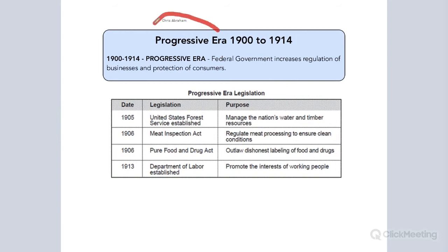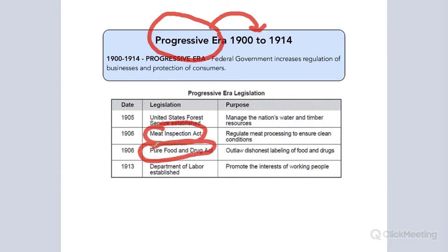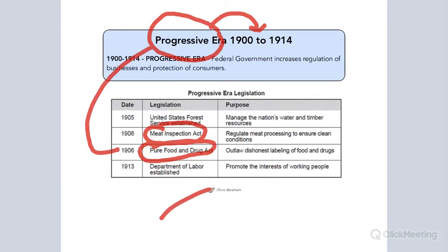Let's jump to the Progressive Era — this time frame when the U.S. government was getting involved and passing laws to protect the consumer. These laws were like the Meat Inspection Act or the Food and Drug Act — laws passed because at that time there were no regulations in factories to make sure that meat was sanitary or medicines were safe. The federal government was very hands-on, passing laws to protect the consumer. We have a period of increased regulation.